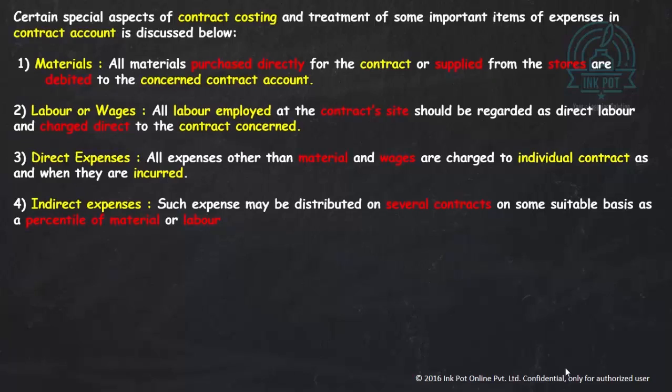There are two key terms: contractor and contractee. The contractor is the one who performs the contract, and the contractee is the person who gives the contract. The contract account is prepared in the books of the contractor, not the contractee. The contractor does the work for the contractee, so all expenses — materials, labor, direct and indirect expenses — are incurred by the contractor and shown on the debit side.